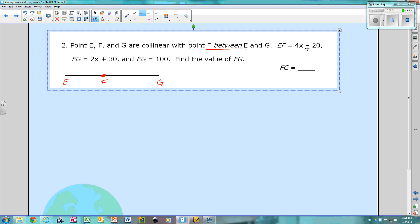So it says EF is 4X minus 20, so I'd go over here, 4X minus 20. So EF is 4X minus 20, FG is 2X plus 30, EG is the whole thing, so the whole thing is 100. You're going to find the value of FG. So remember, FG is 2X plus 30. So I need to find X to plug it in to find the actual value. So I know that EF plus FG equals EG. So now I'm just going to plug in these values here. EF is 4X minus 20, plus FG is 2X plus 30, equals, the whole thing is 100.